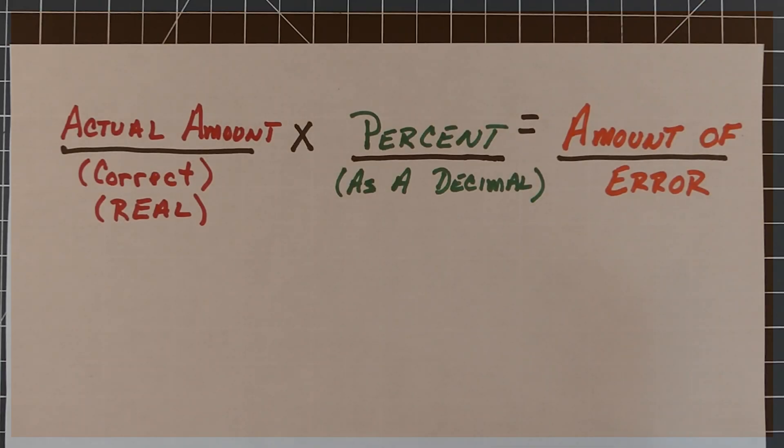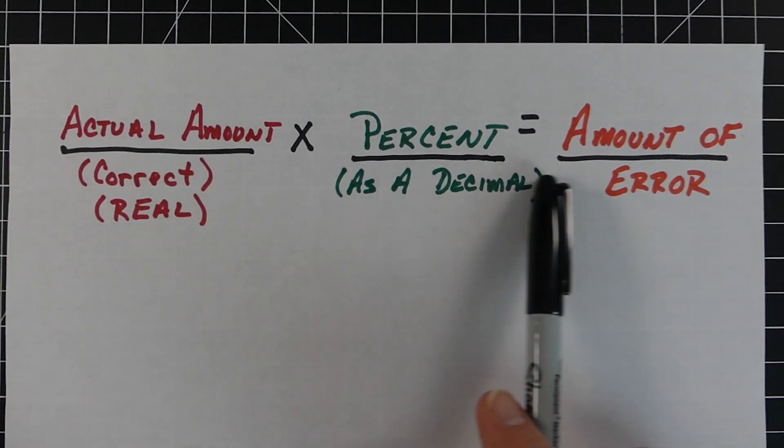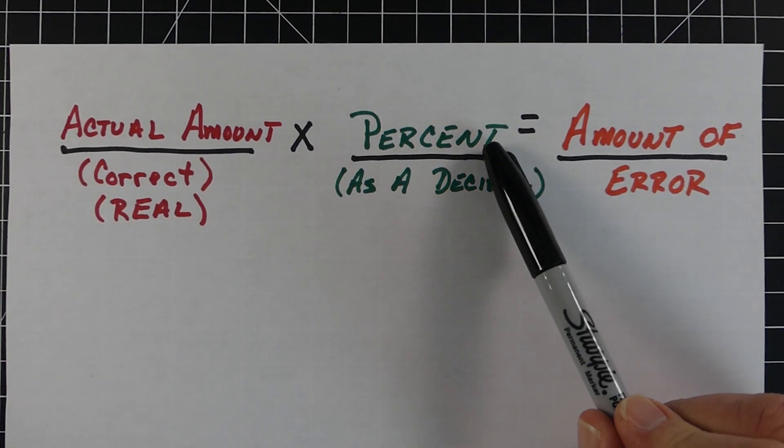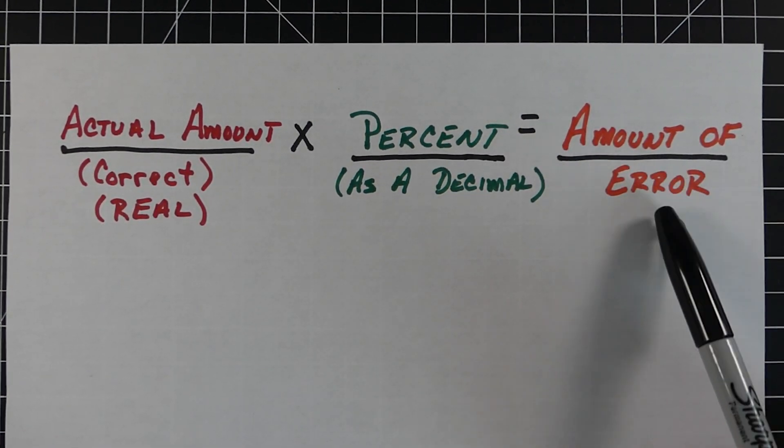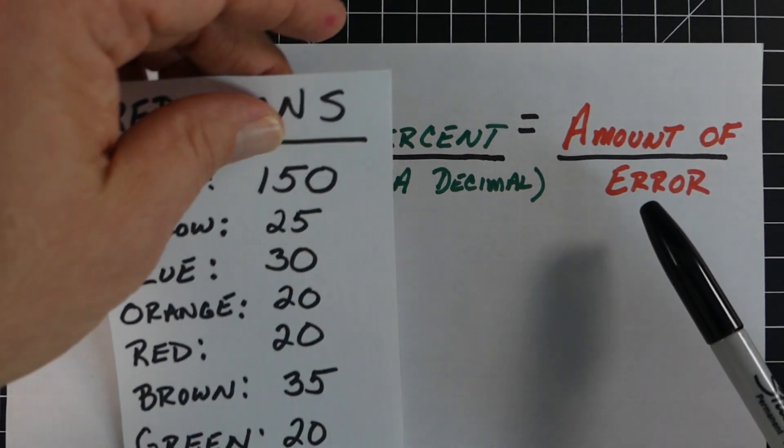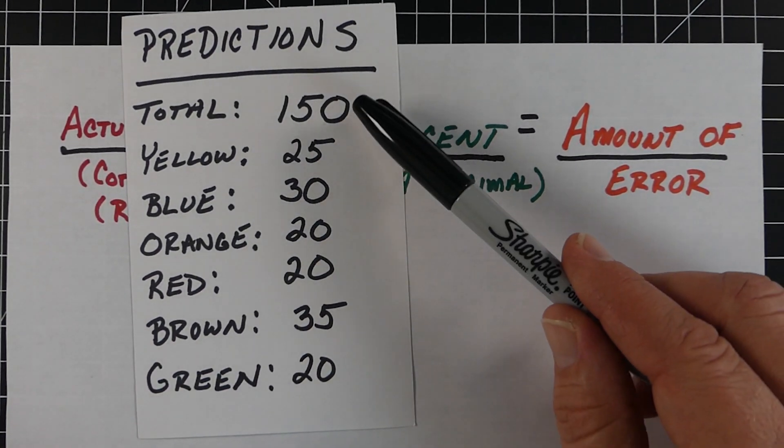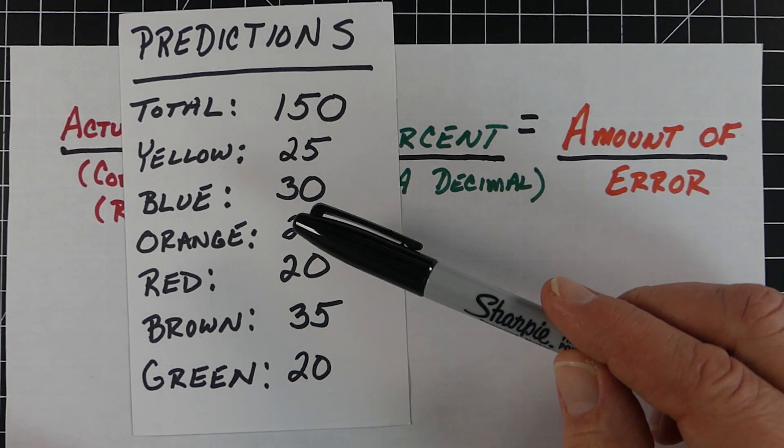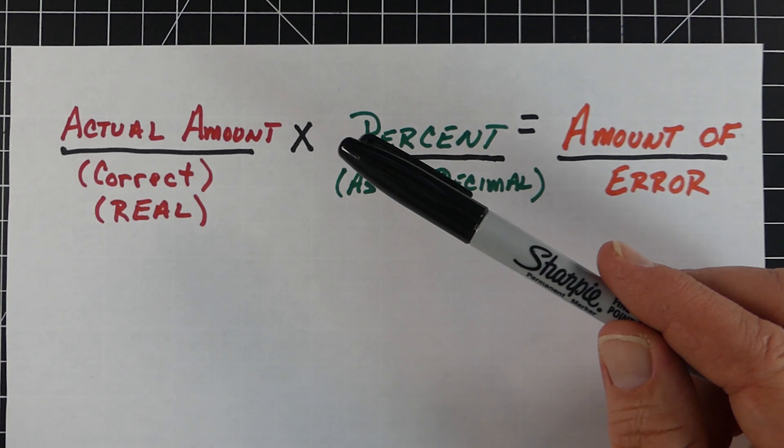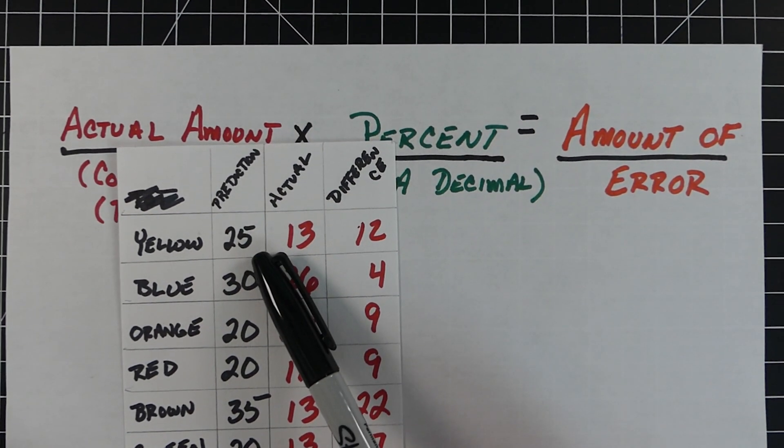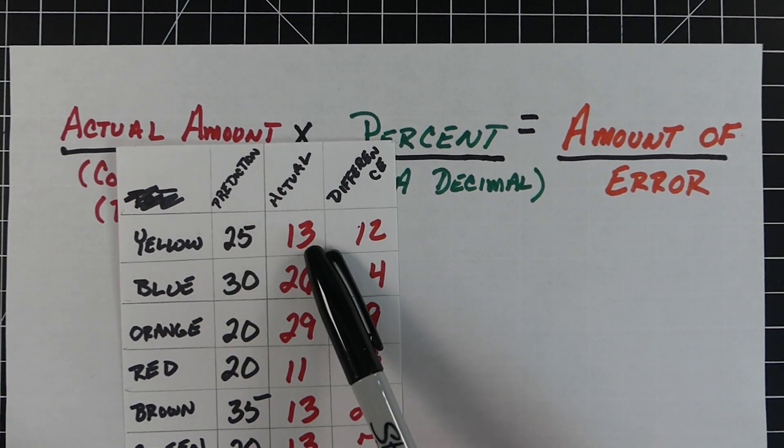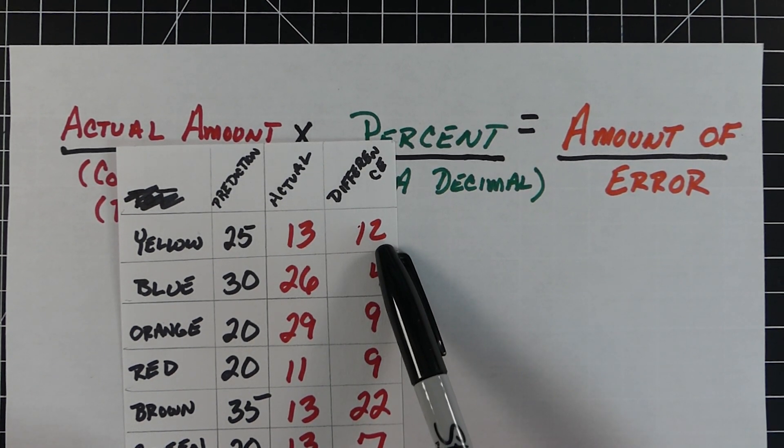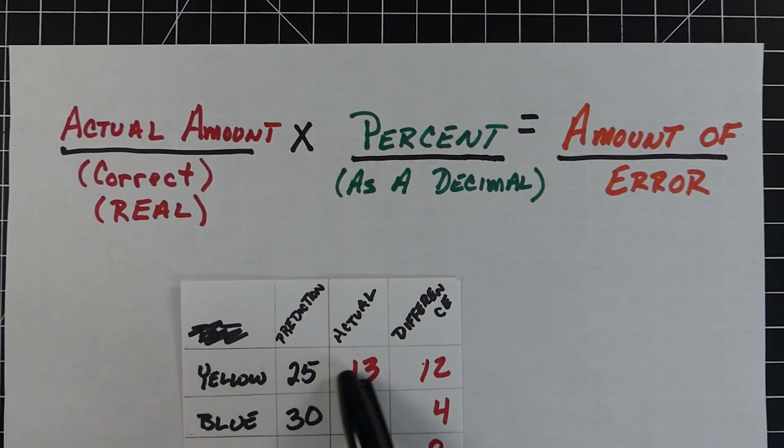We're going to calculate my percent of error for each one using this special equation. It's actual amount, which is the real answer, times the percent of error as a decimal, equals the amount of error. These were my original predictions. The actual results compare what we predicted and what actually happened. The final column was the difference. The two columns in red are what we'll use to fill in the equation numbers.